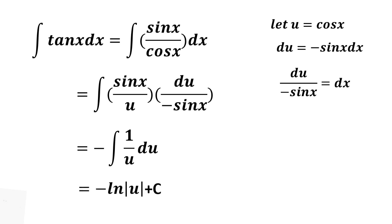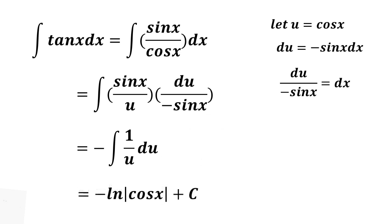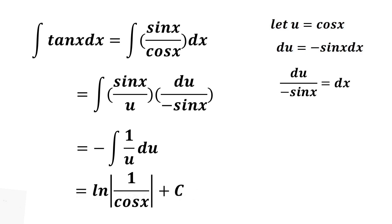This is equal to negative ln of the absolute value of u plus c. Substituting back cosine x for u, we have negative ln of the absolute value of cosine x plus c. Using the laws of logarithmic functions, we put a negative one as the power of cosine x, making it ln of the absolute value of 1 over cosine x plus c. Since 1 over cosine is secant, the final answer is ln of the absolute value of secant x plus c. This is the integral of tangent x.